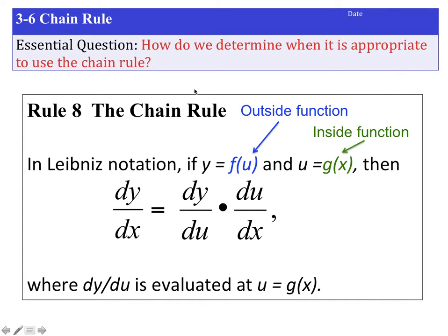Today's essential question is: how do we determine when it's appropriate to use the chain rule? When does the chain rule help us, and when does it become cumbersome so we're better off not using it?